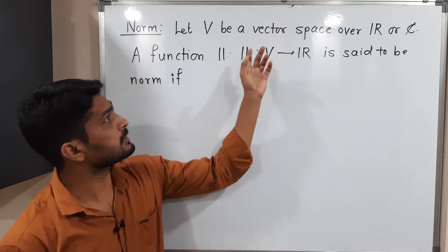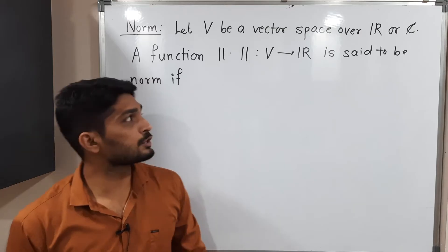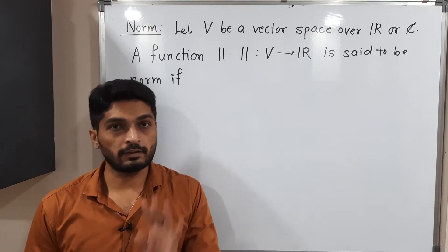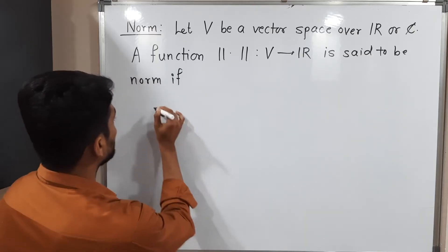Norm is basically a function from V to R, and it should satisfy four conditions. Let us discuss those four conditions.